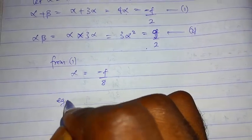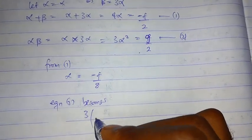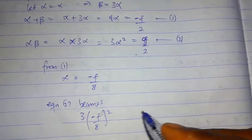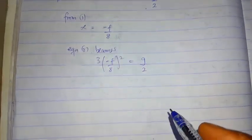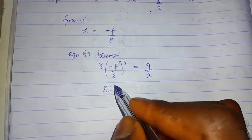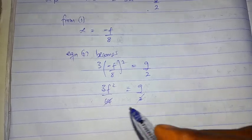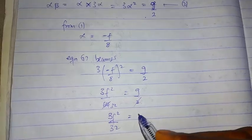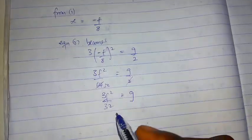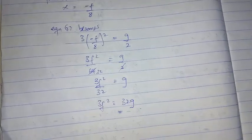Substituting alpha equals minus f over 8 into equation two: 3·(minus f over 8)² equals g over 2. This becomes 3f² over 64 equals g over 2. Cross-multiplying: 3f² equals 64g over 2, which gives 3f² equals 32g. This completes the proof.